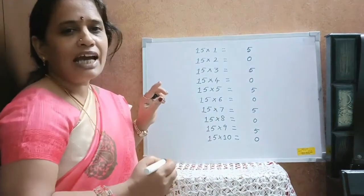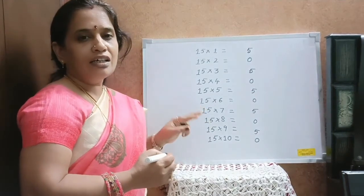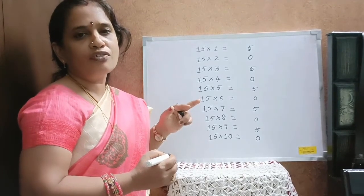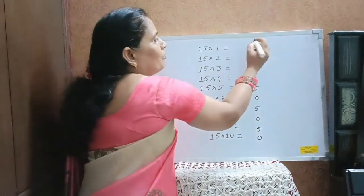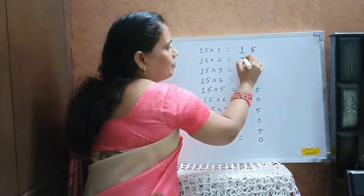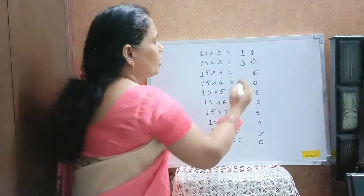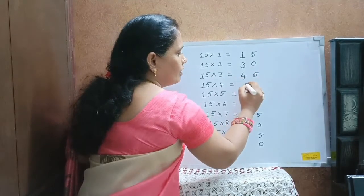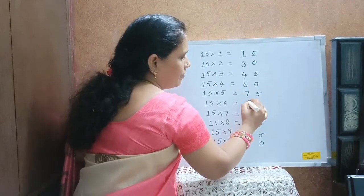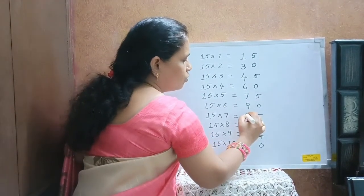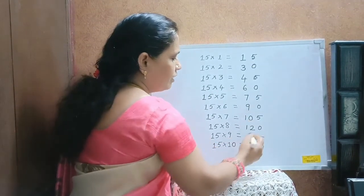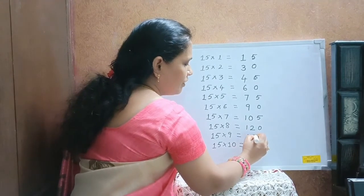For the tens digit, we have to write 2 consecutive odd numbers and then 2 consecutive even numbers. First write 2 odd numbers: 1, 3, and then 2 consecutive even numbers: 4, 6, and then 2 consecutive odd numbers: 7, 9, and then 2 consecutive even numbers: 10, 12.